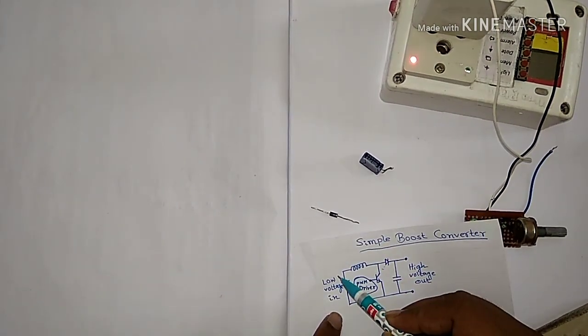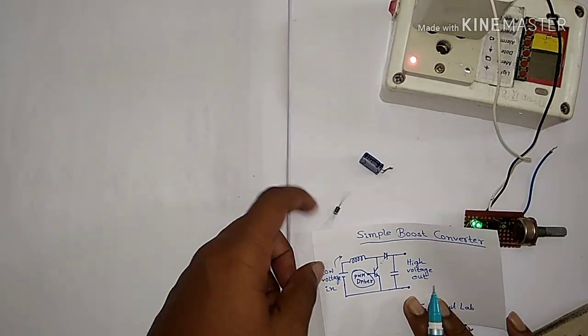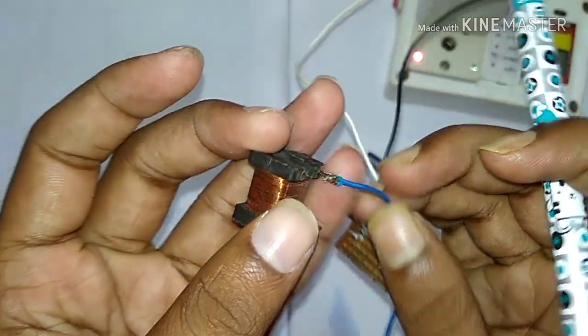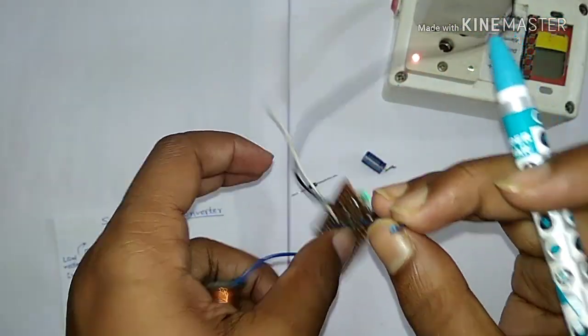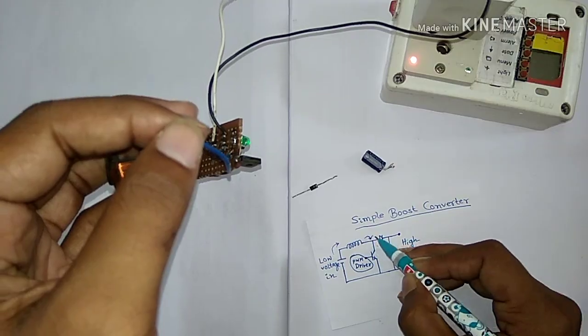The schematic tells us to connect the positive input to a coil terminal just like this, and this transistor's collector pin connects to the other side of the coil as I did.